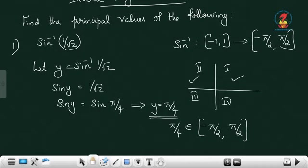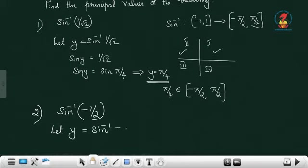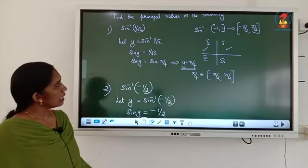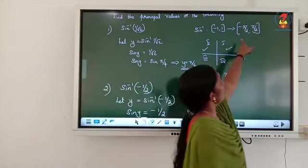Now check one negative value. Second question: sine inverse minus half. Let y equal to sine inverse minus half. So we can write sine y equals minus half. Here the value is negative. We have to express this minus half in terms of sine. But we cannot take the value from the third or fourth quadrant since the range is minus 90 to 90.